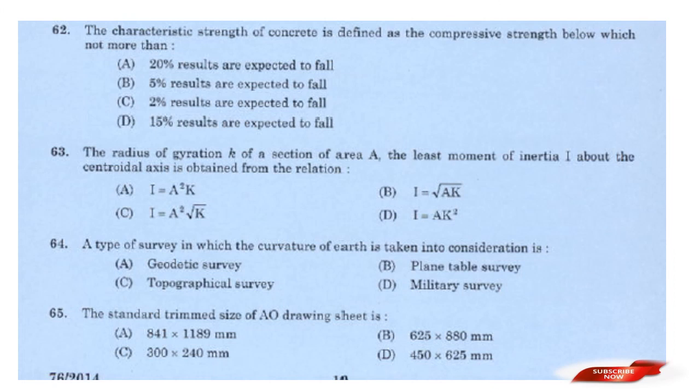Question: The characteristic strength of concrete is defined as a compressive strength below which not more than? Options: 20% of results are expected to fall; 5% of results are expected to fall; 2% of results are expected to fall; 15% are expected to fall. Answer: Option B — 5% of results are expected to fall.